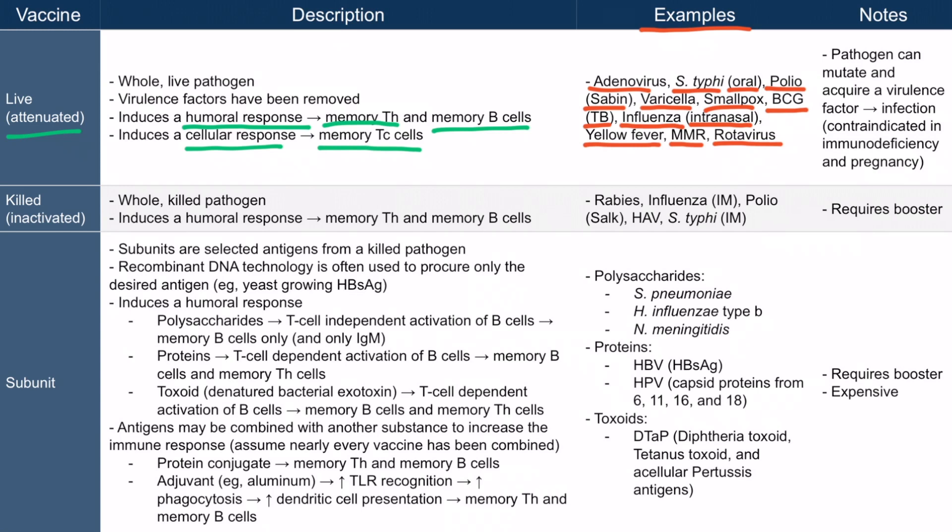Each of the microbiology videos covering these pathogens includes a memory hook to help you remember that they are live vaccines. The symbol used is a sign that reads 'live animals.' For example, in yellow fever, there is a live animal sign pointing to a trapped monkey, which is central to the story.